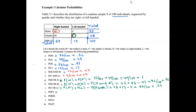The probability of M-prime — the complement of male, meaning people who are not male — is 48 out of 100, giving 0.48.